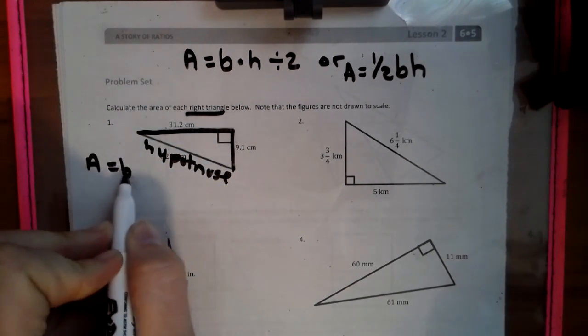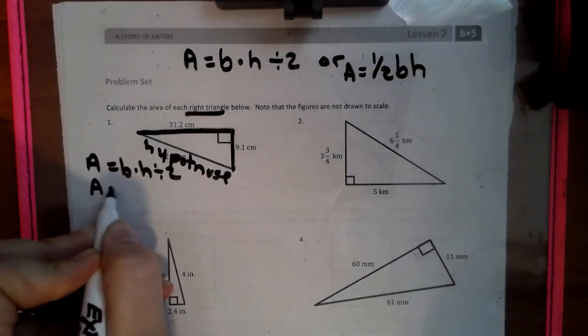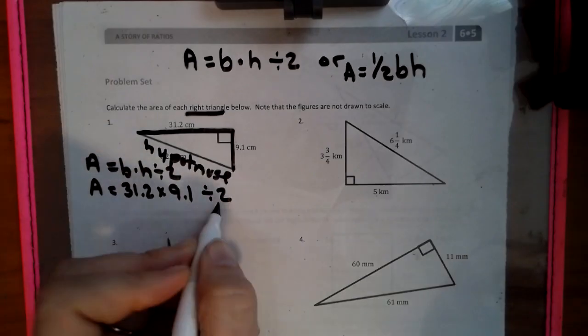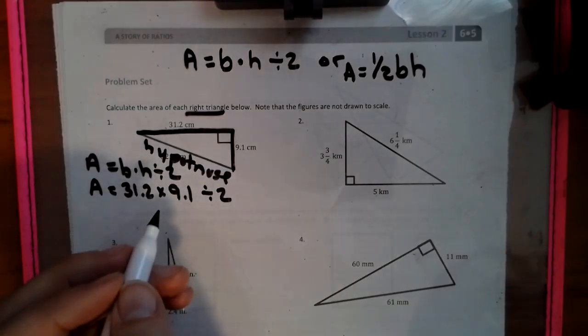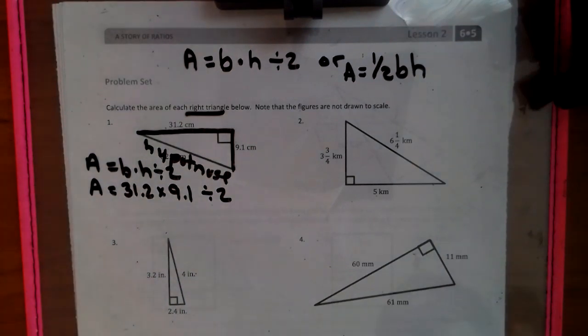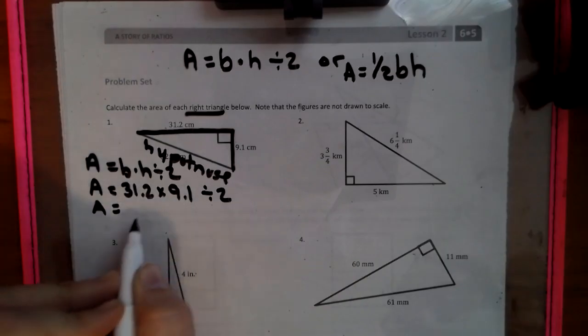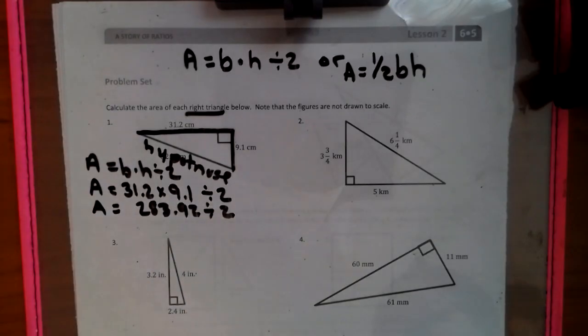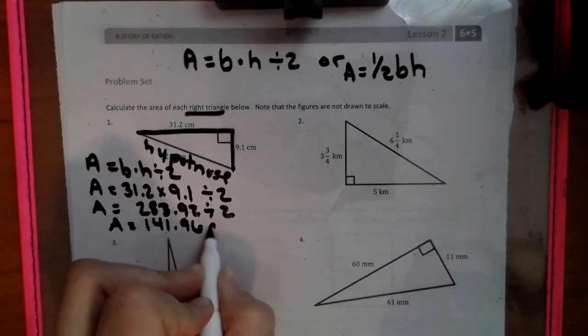So we have area equals base times height divided by two. So we want to have the formula line with the big A first. Area equals 31 and 2 tenths times 9 and 1 tenths divided by two. The reason why I chose this formula here is because neither of these two numbers do I want to split in half in my head. So I really just want to do these naturally on paper. When I multiply these two numbers together, 31 and 2 tenths times 9 and 1 tenths, I'm going to get 283 and 92 hundredths. Then I need to divide it by two. And then when I divide that by two, we're going to cut this all answer in half, which is dividing by two.